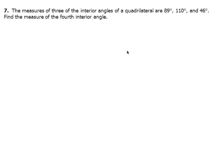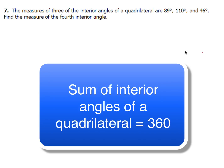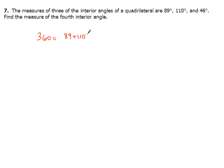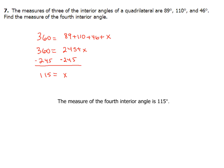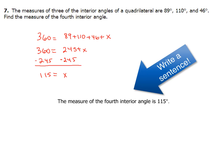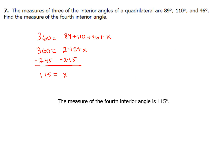For example seven, the measures of three interior angles of a quadrilateral are 89, 110, and 46 degrees — find the measure of the fourth interior angle. All four angles of a quadrilateral add up to 360 degrees: 360 = 89 + 110 + 46 + x. Adding the known angles gives 245, so subtracting 245 from both sides gives x = 115. The measure of the fourth interior angle is 115 degrees.